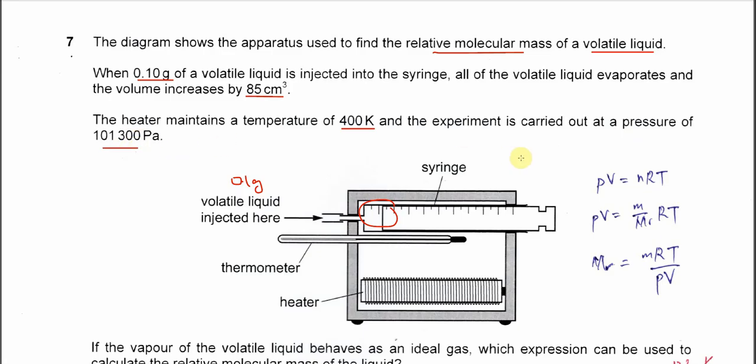So later we use all this information for the expression. Before we choose the answer, first you need to know this combined gas law: PV = nRT.